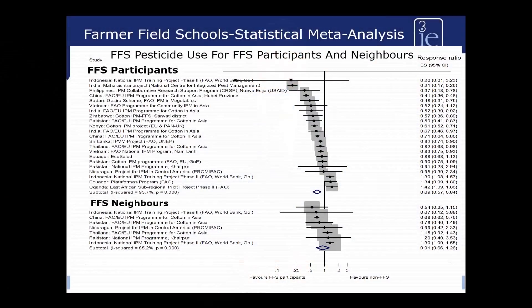Here we have a rather complex looking graph called a forest plot. It's taken from a systematic review that 3IE recently undertook on the effectiveness of farmer field schools. Two of the things that the review was investigating were whether farmer field schools have an effect on farmers in terms of their use of pesticides — the default position being that we hope that by being exposed to farmer field schools they will use fewer pesticides — and whether information that farmers get is passed on to nearby farmers, which we call diffusion. You can see at the top where it says FFS participants, 22 single studies.